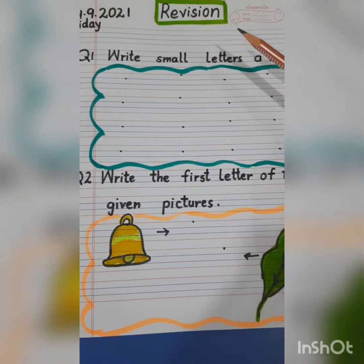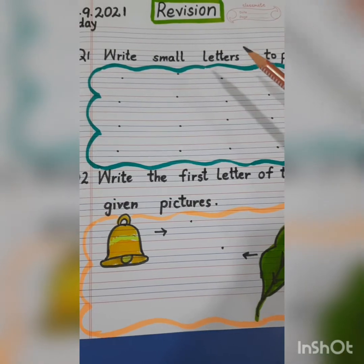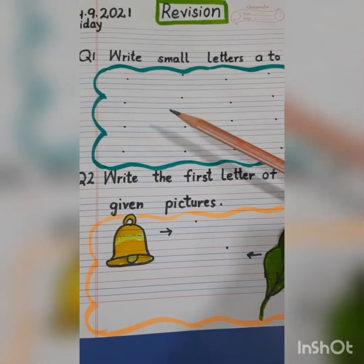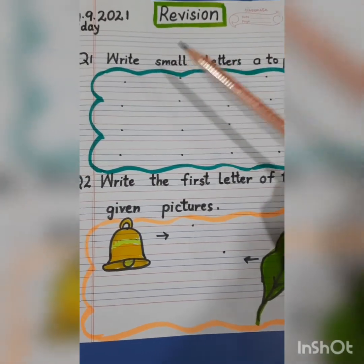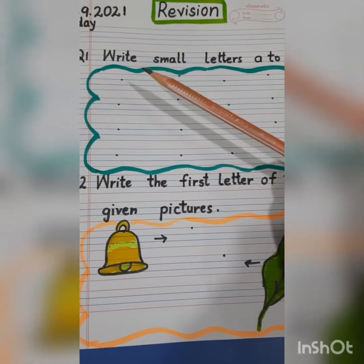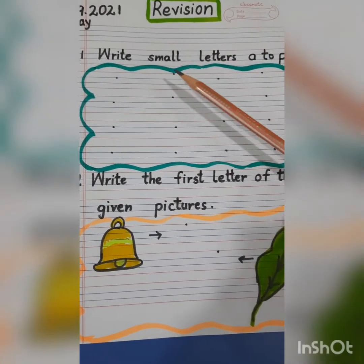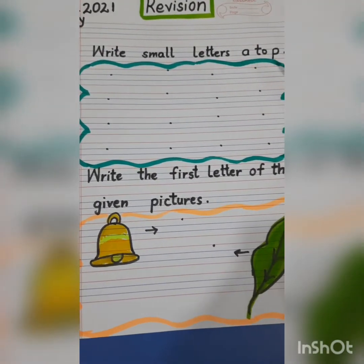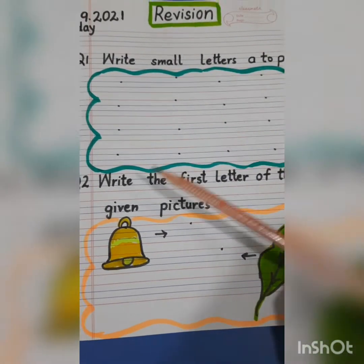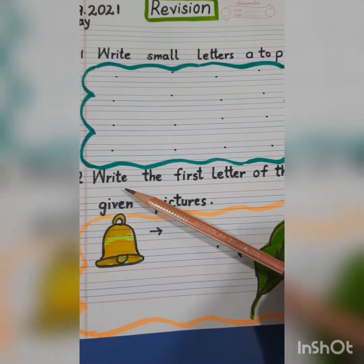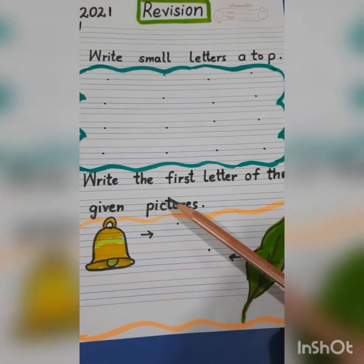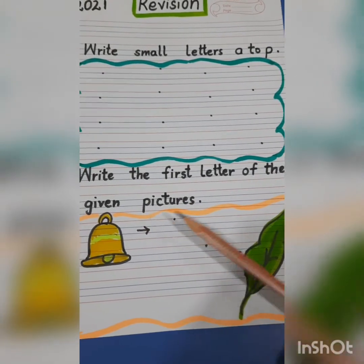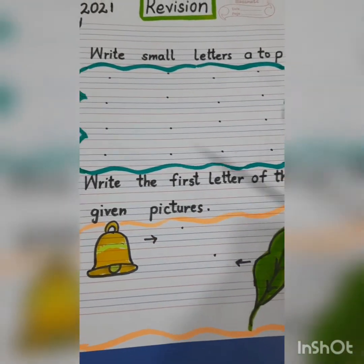So in revision today we are going to do two questions. First one is: write small letters A to P. And second one is: write the first letter of the given pictures.